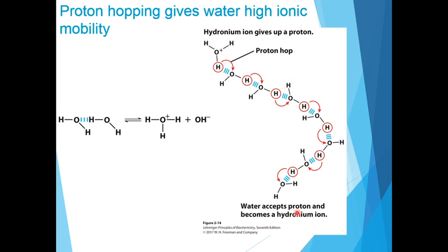As shown in this figure, proton hopping is where a proton from a hydronium ion is taken up by the oxygen of the adjacent water molecule, and this chain continues from one hydronium ion all the way through the water. No individual proton moves very far through the bulk solution — it moves via hydrogen-bonded water molecules in what is called the proton hopping phenomenon.